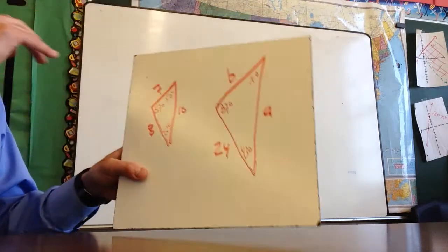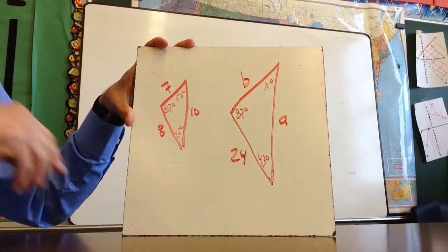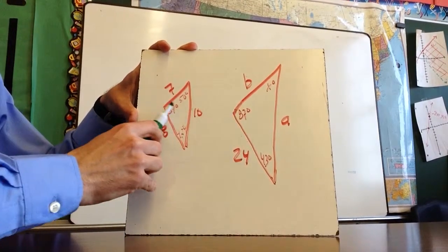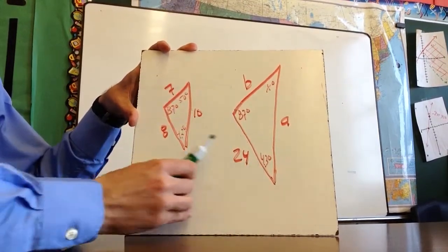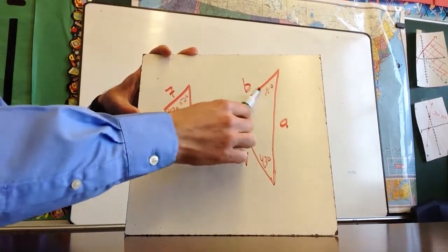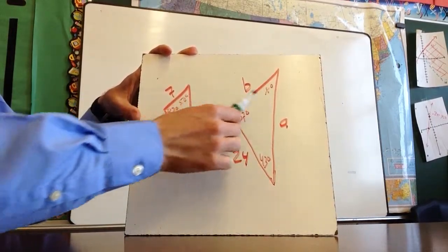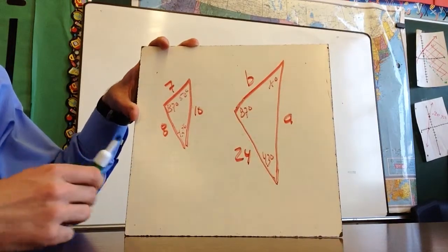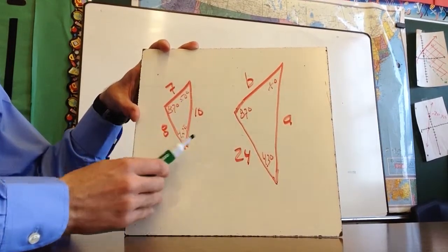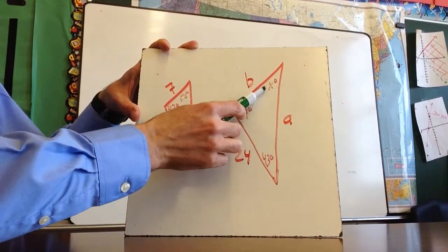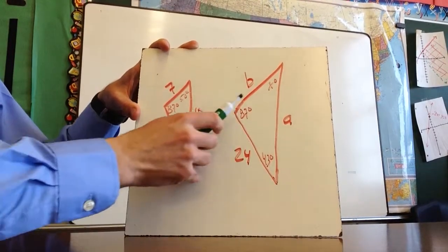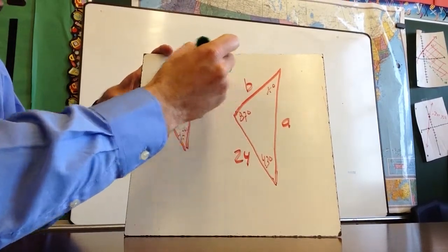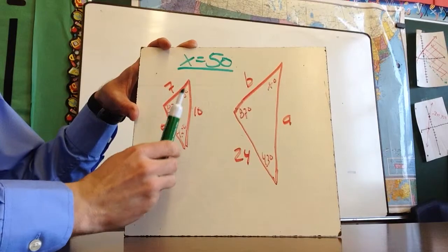How do we find missing values? In this example, we know 87 and 87 are congruent, and 43 and 43 are congruent, meaning the third angles must also be congruent. The angles are 87, 50, 43 in one triangle, and 83, 87, 43, and X in the other. So X must equal 50. The most logical approach: if two pairs of angles are congruent, the third must be too.